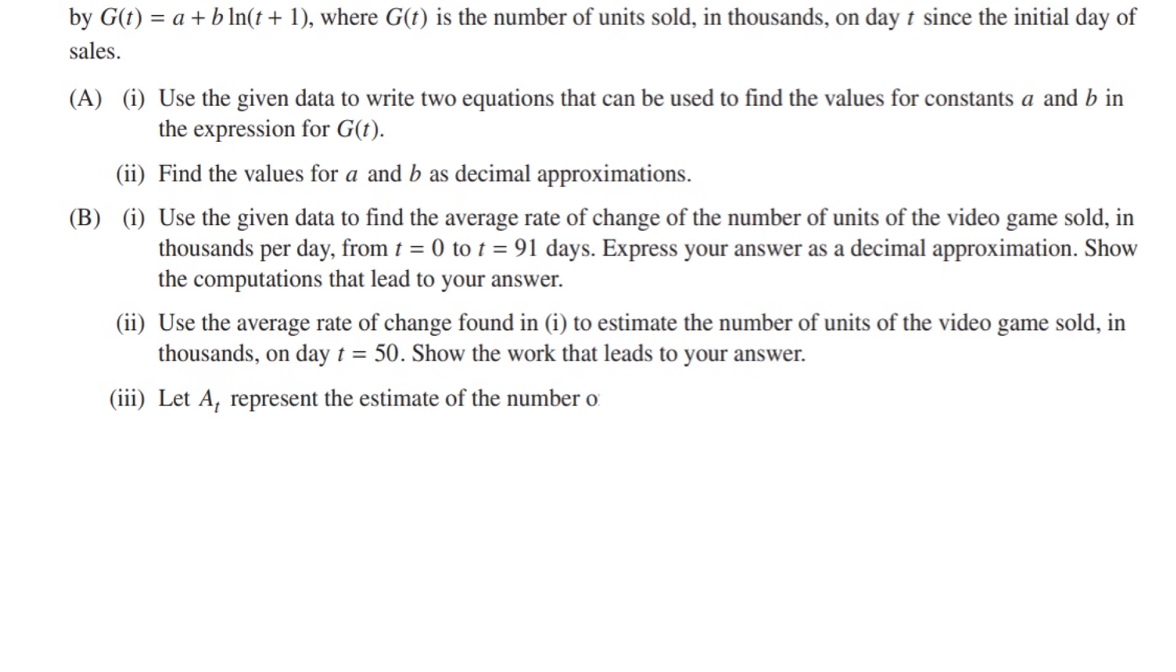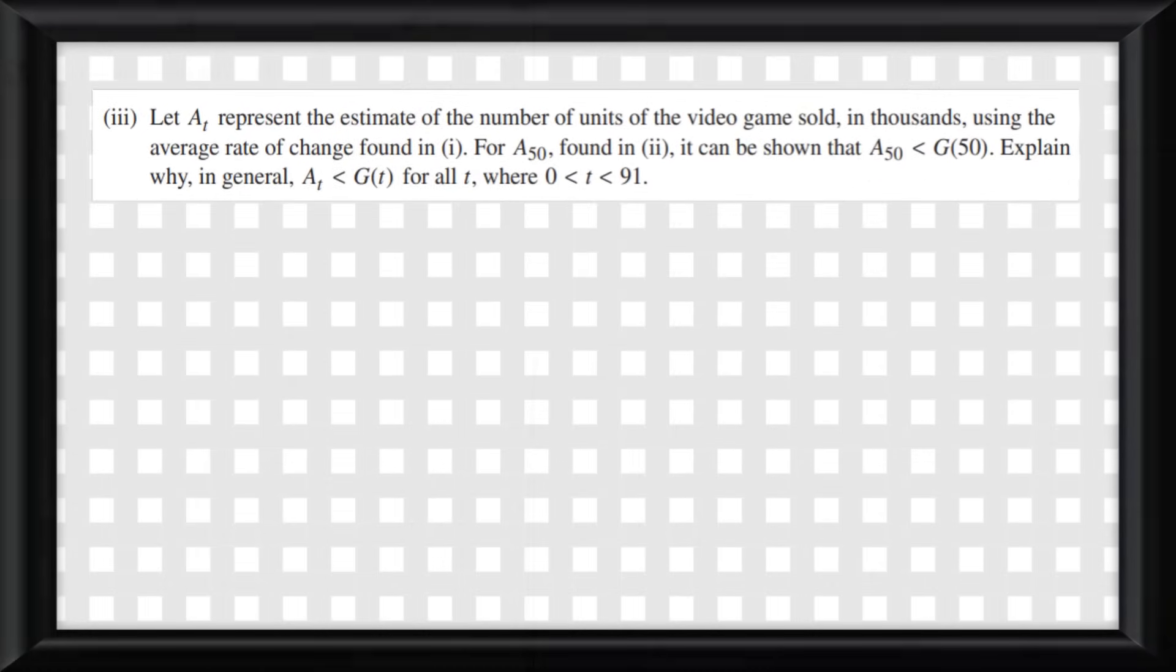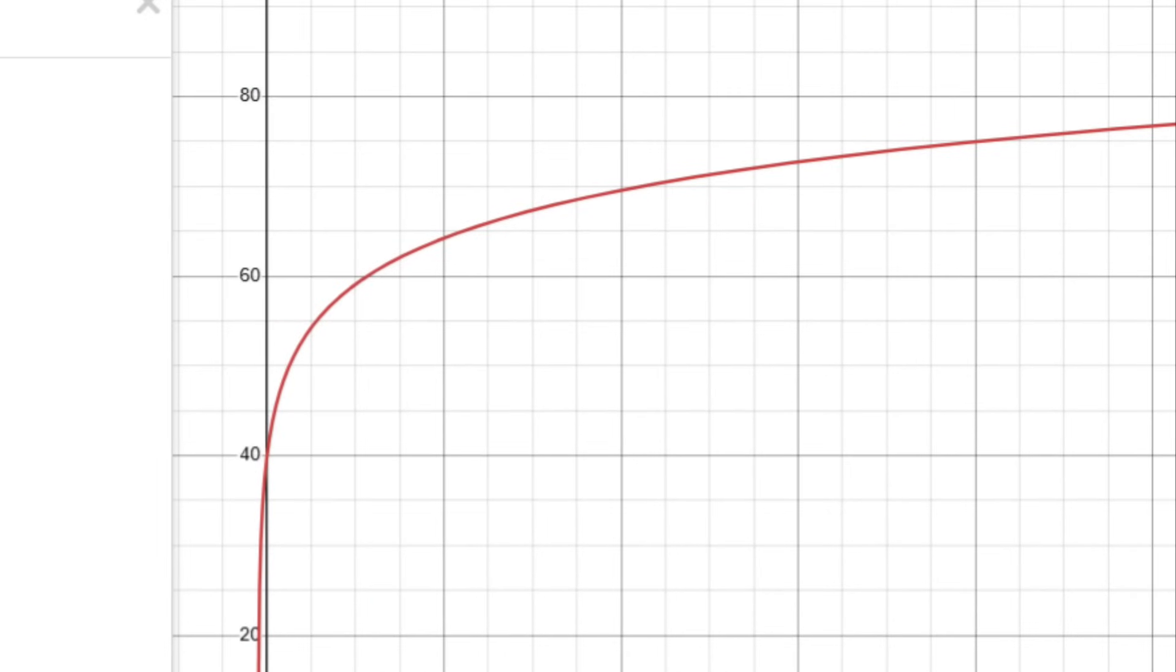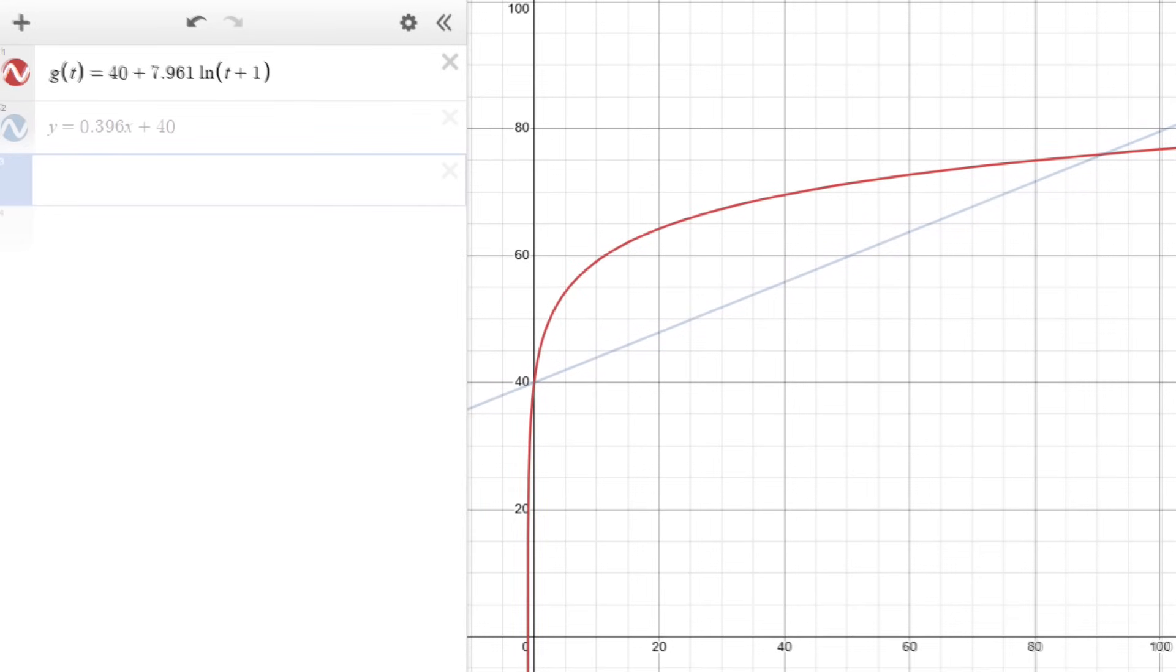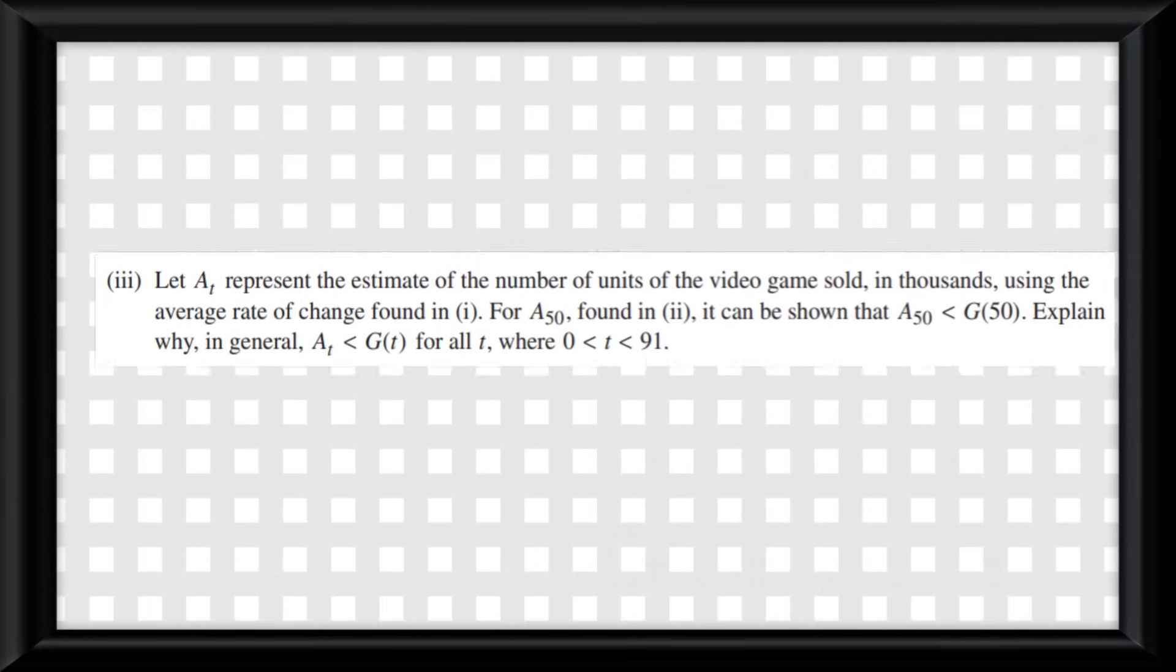Alright, next one. Let a_t represent the estimate of the number of units of the video game sold in thousands using the average rate of change found in i. For a(50) found in 2, it can be shown that a(50) is less than g(50). Explain why, in general, a_t is less than g(t) for all t where t is between 0 and 91. So this one is interesting. If we graph the actual function, we see it as a concave down log graph. If we were to graph the rate of change equation we got on top of that, we see it exactly as the question says. The rate of change equation is simply a secant line created to go between the points t equals 0 and t equals 90.